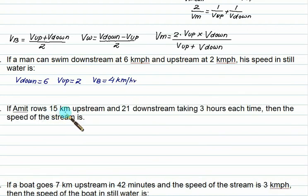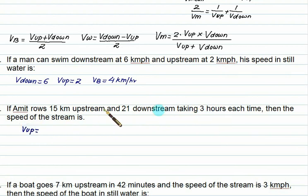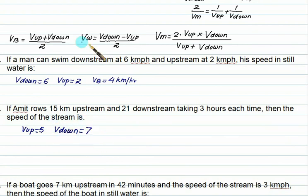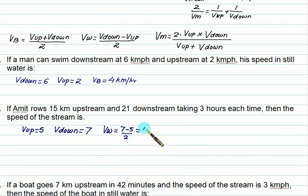Amit rows 15 km upstream and 21 km downstream, taking 3 hours each. So velocity of upstream is 15 divided by 3 equals 5 km/h, and velocity of downstream is 21 divided by 3 equals 7 km/h. The speed of the stream is Vw equals Vdown minus Vup divided by 2, that is 7 minus 5 divided by 2, equals 1 km/h.